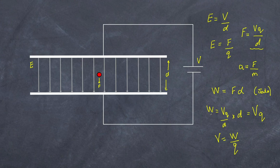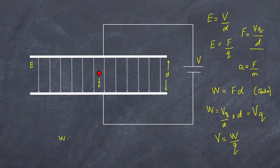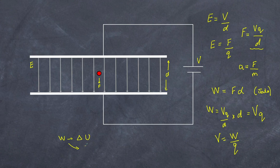Work done leads to one of two things. If we apply a force in the opposite direction to counteract the attraction towards the negative plate, we do work against the field, increasing the particle's potential energy. Alternatively, if we simply release the charge, it accelerates — kinetic energy increases. The work done by the field results in a change in kinetic energy, given by ½mv².